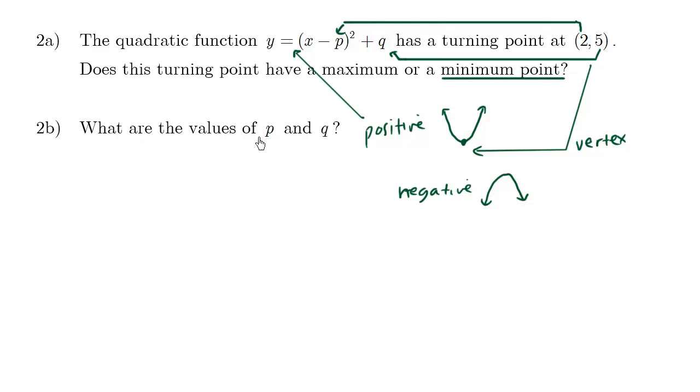As for 2b, the values of p and q, as we already mentioned, are 2 and 5 respectively.